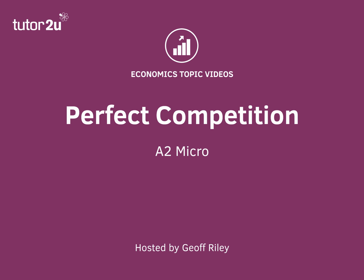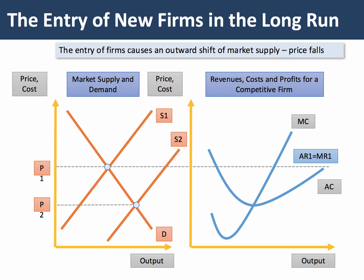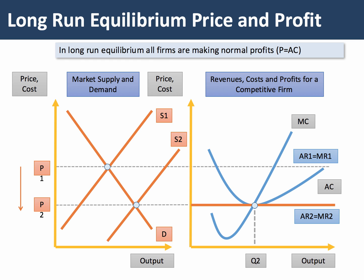In perfect competition, at price P1 the firms are making super normal profit because the price is above the average cost curve at the equilibrium output. If firms are making super normal profit then new firms will enter the market, driving the market supply curve out to S2 and the price down to P2. Because firms are price takers, there's an equilibrium at output Q2 where all firms are making normal profit.